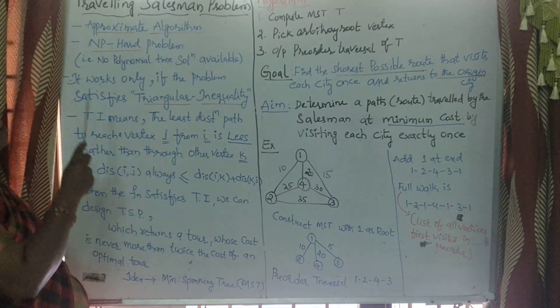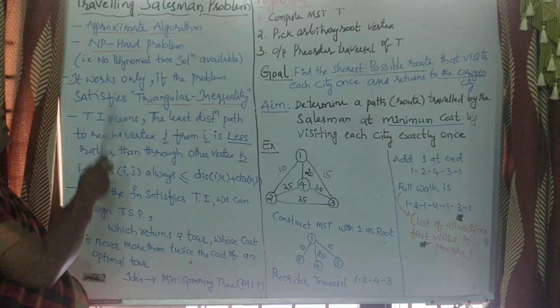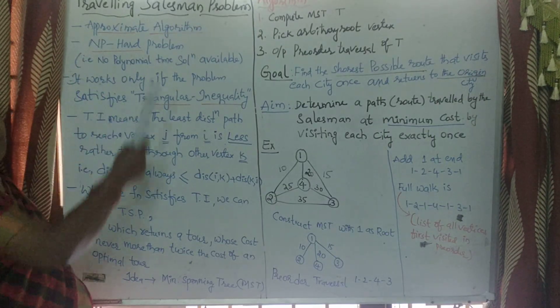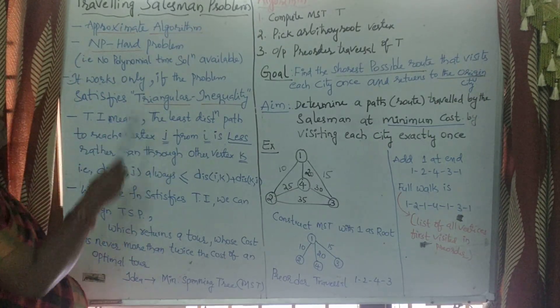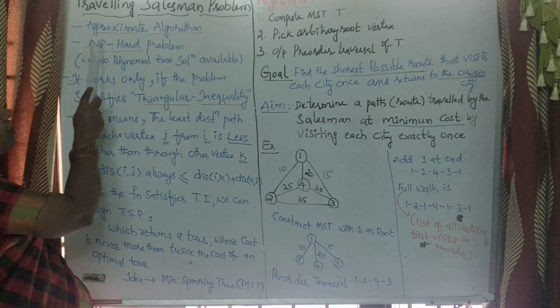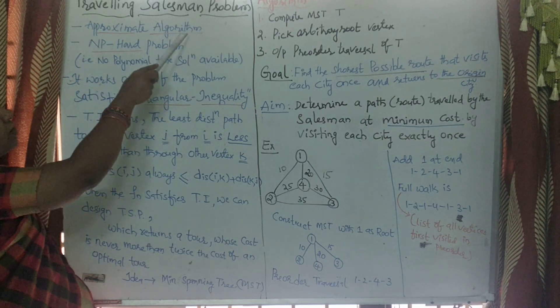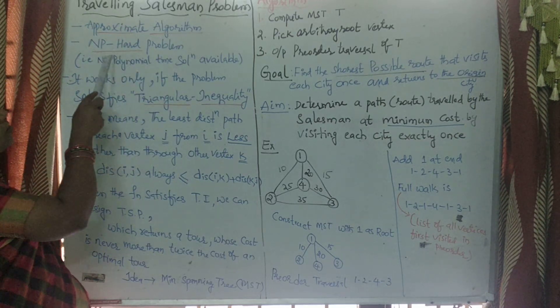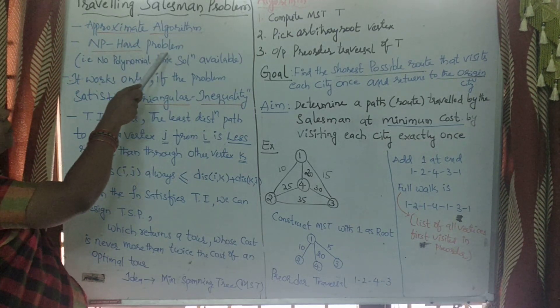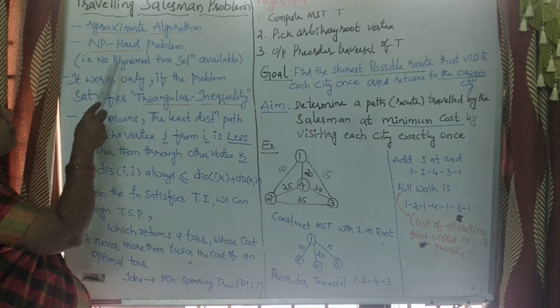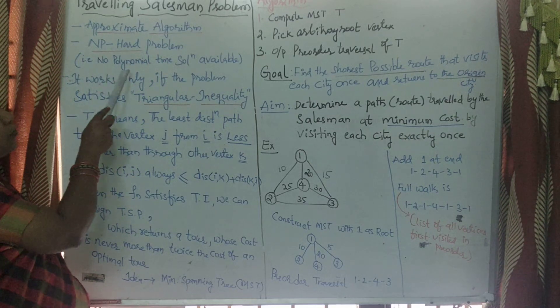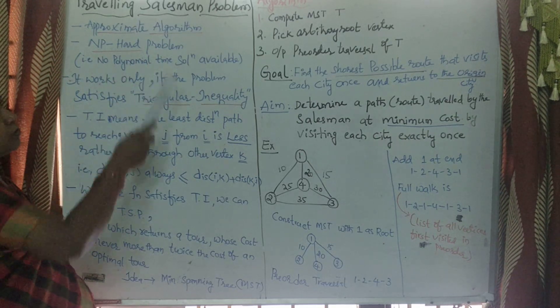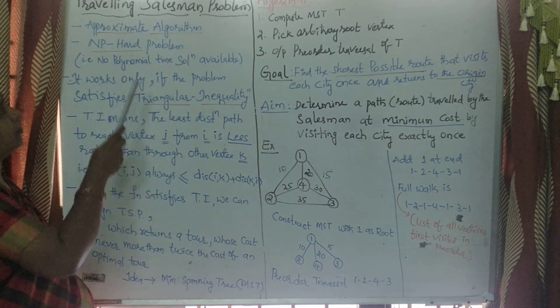Hello everyone. Today our topic is the Travelling Salesman Problem. This is one of the approximate algorithms. It is also an NP-hard problem, which means no polynomial time solution is available.